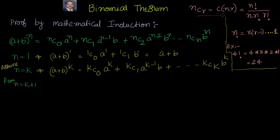A small explanation: if you are not comfortable with kC0, kCk, or the general form nCr, and also if you are not aware of what factorial means — factorial is nothing but you start from that number and multiply by each integer subtracting 1 each time till you reach 1. You can refer to that explanation if you need it.